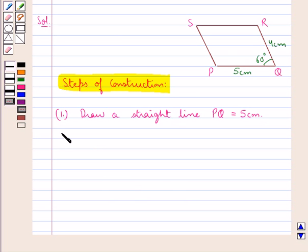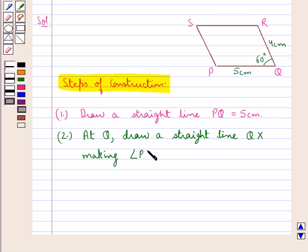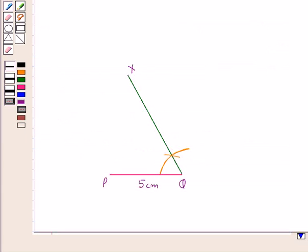In the next step at Q draw a straight line QX making angle PQX equal to 60 degrees. So we have drawn this straight line QX such that this angle PQX is of measure 60 degrees.